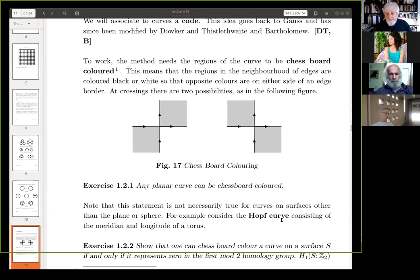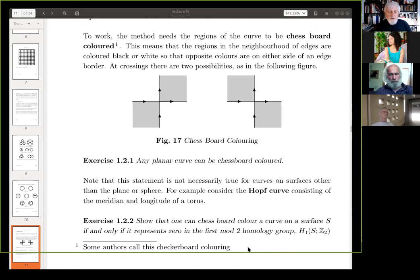And then any planar curve can be chessboard colored, but this is not true for curves on surfaces other than the plane or sphere. For example, the Hopf curve consisting of the meridian longitude of a torus that can't be chessboard colored. Sometimes this is called checkerboard coloring. We don't have checkers in Britain, we have draughts, but anyway. Do you refer to draught board coloring? Draught board? I don't know what that is. Oh, draughts, I'm sorry. I mispronounced it. Yeah, draughts. Yeah, you could, yeah. But you, you call it checkers, don't you? Yeah.